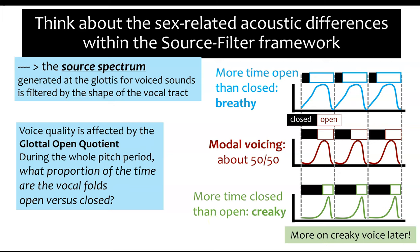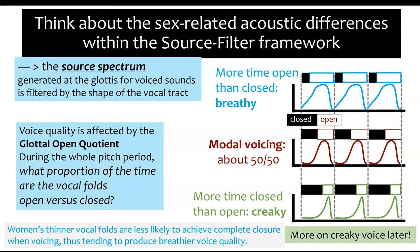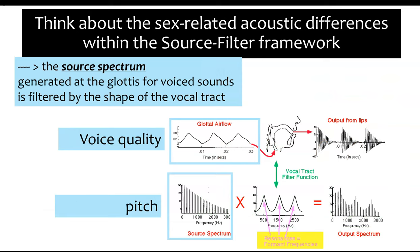We want to concentrate on the physical differences and their consequences for the sound of the voice. For example, if women have thinner vocal folds, they might be less likely to achieve complete closure during the pitch period when phonating, and therefore produce a breathier voice quality. The two things we've discussed are fundamental frequency determined by the source spectrum, and voice quality corresponding to the proportion of glottal airflow during each pitch period.